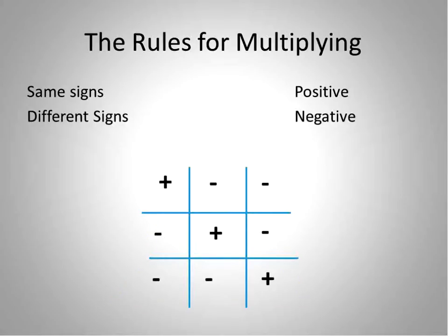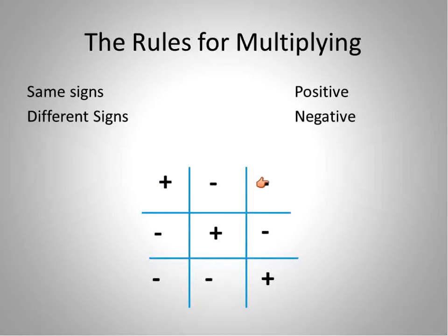A student of mine — shout out to this student — has been very excited to show this tic-tac-toe type board, and I wanted to share it and thank him. This is used from a left-to-right perspective. Positive times a negative equals a negative. Negative times a positive equals a negative. And a negative times a negative equals a positive.